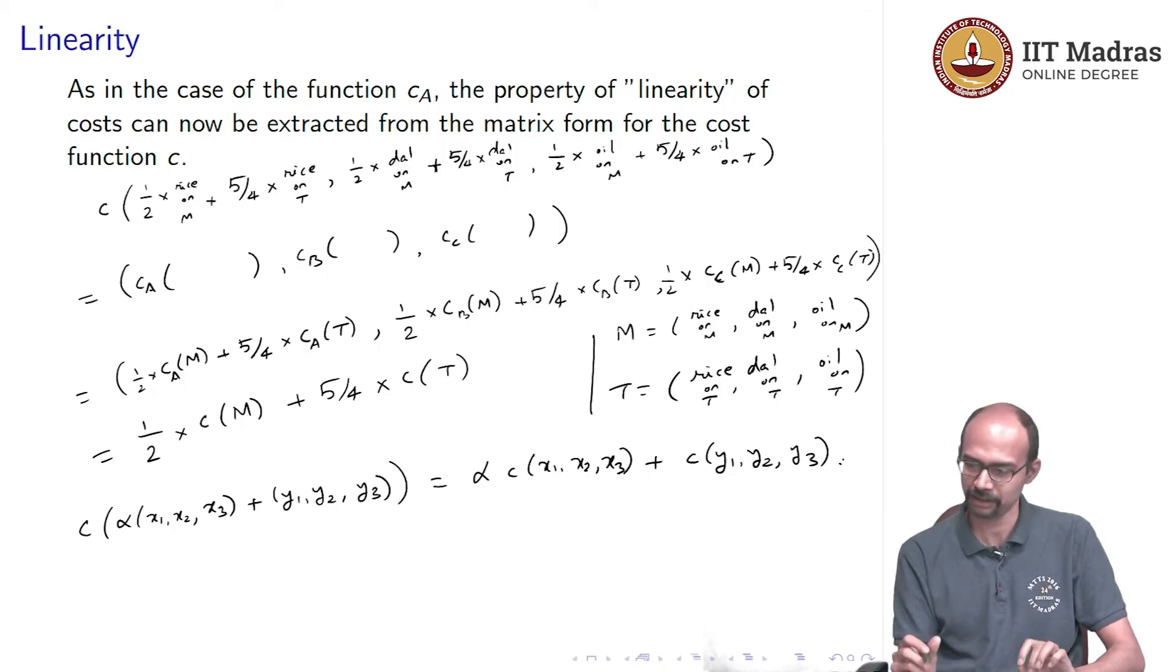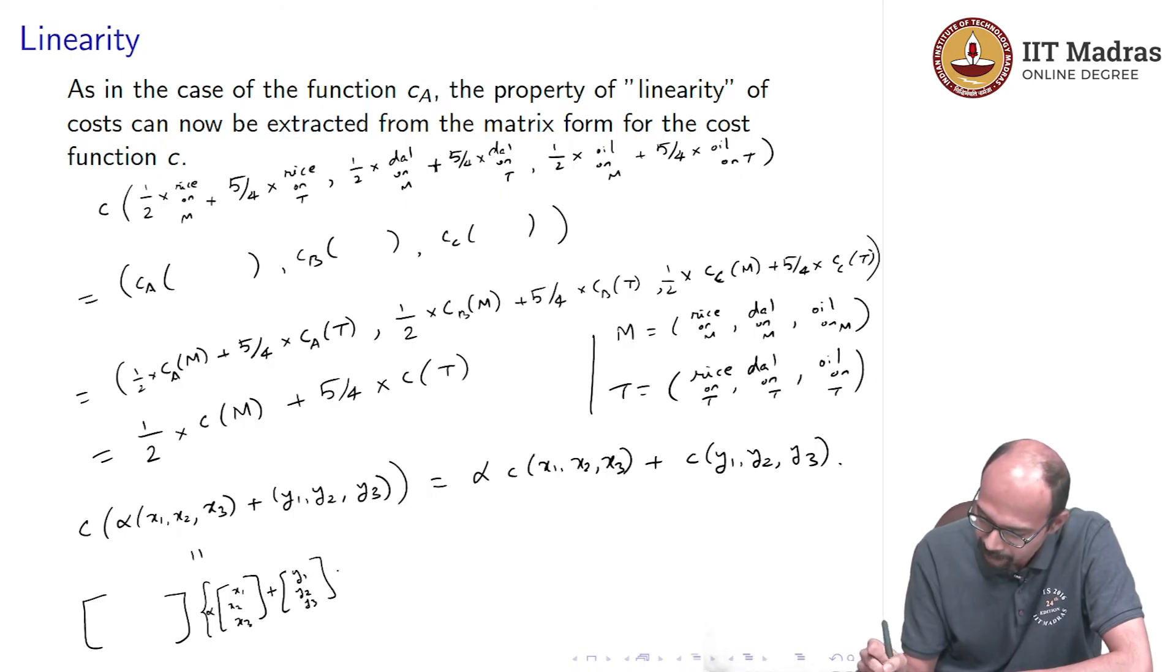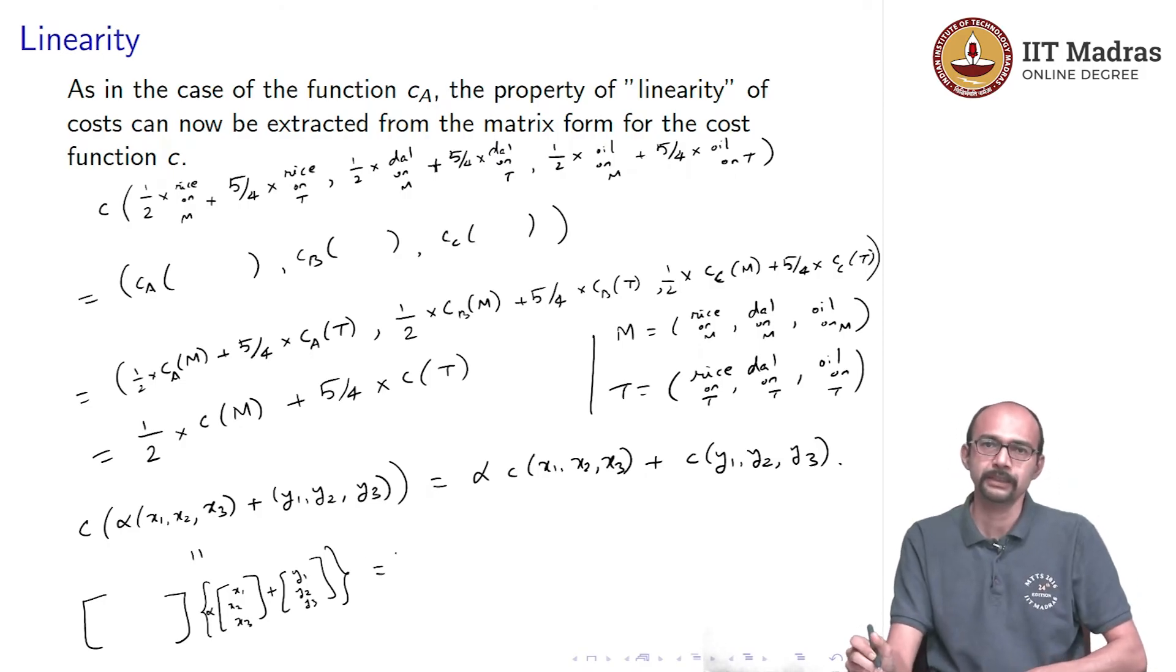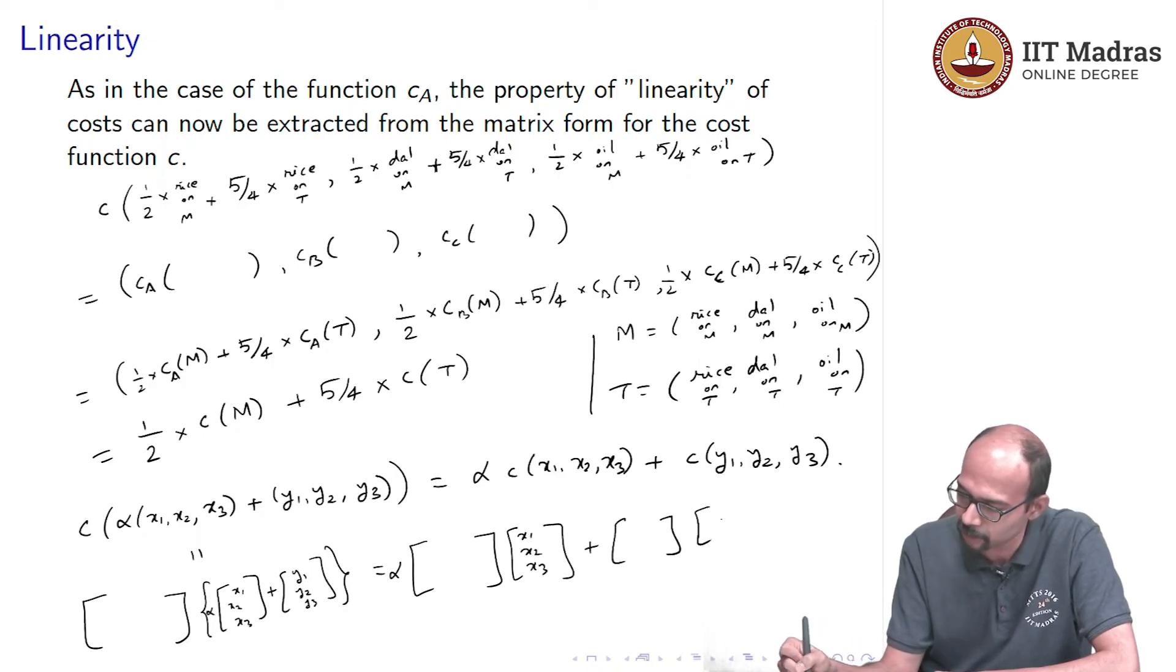That is what this video was about. Remember, linear mapping. These are examples of linear mappings. Now, the claim is this can be, we could have done this in one shot by using the matrix. How is that? Because remember that, I can write this as the matrix times the vector (x1, x2, x3) plus the vector (y1, y2, y3). But we know that matrix multiplication commutes with addition. So, I can instead write this as the matrix, the cost matrix that we had in the earlier slide times (x1, x2, x3) and I can pull the alpha out because constants come out plus the same matrix times (y1, y2, y3).